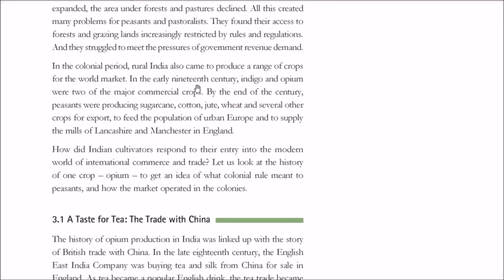The crops grown by Indian peasants and farmers were now shaped by colonial rule. In the early 19th century, indigo and opium were the two major commercial crops. By the end of the 19th century, cash crops such as sugarcane, cotton, jute, and wheat were exported to feed Europe and supply the mills of Lancashire and Manchester in England.